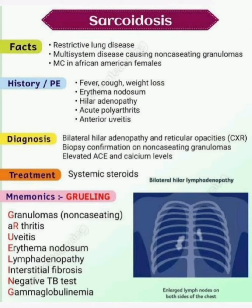Now about the diagnosis. Diagnosis of sarcoidosis includes bilateral hilar adenopathy and reticular opacities on chest X-ray, biopsy confirmation of non-caseating granulomas, and elevated ACE and calcium levels.